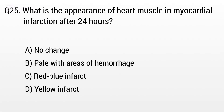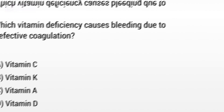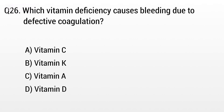Question 25. What is the appearance of heart muscle in myocardial infarction after 24 hours? Option A: No change, B: Filled with area of hemorrhage, C: Red, blue, and brick. But the right answer is Option B: Filled with area of hemorrhage.